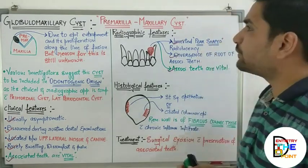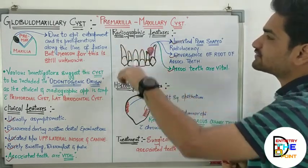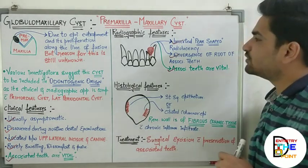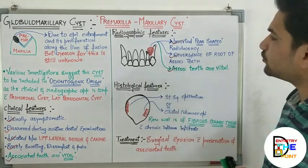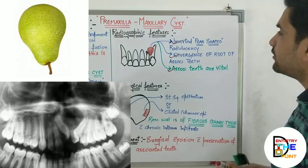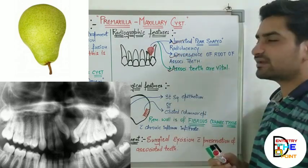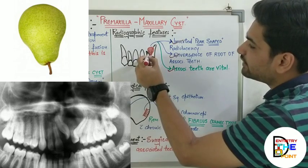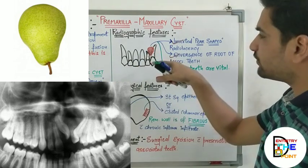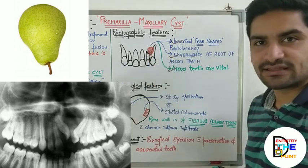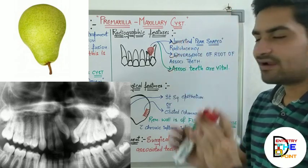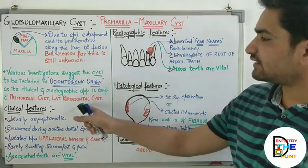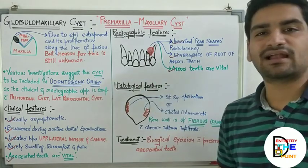Moving on to the most important part — the radiographic features of globulomaxillary cyst, from which you may get questions in your pre-PG examination. The radiographic appearance of globulomaxillary cyst is going to appear as an inverted pear-shaped radiolucency, seen between the lateral incisor and canine.